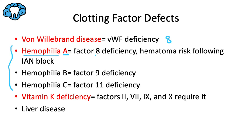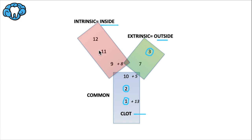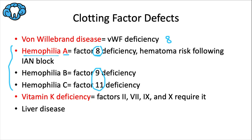Hemophilia A involves a deficiency in factor 8 — 'A for 8.' Hemophilia B involves a deficiency in factor 9. Hemophilia C involves a deficiency in factor 11 — you can remember B and C go together by calling 9-1-1. Notice that all forms of hemophilia affect the intrinsic pathway — factors 8, 9, and 11 are all right next to each other in that pathway.